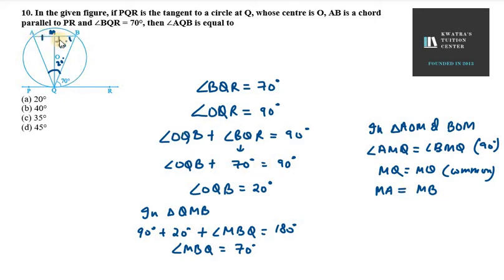You can see SAS criterion here. If we can apply SAS criterion, then we can say that angle OQA will be equal to angle OQB by CPCT.